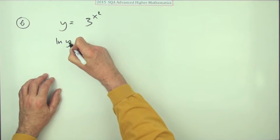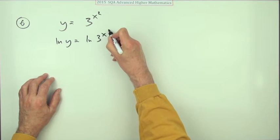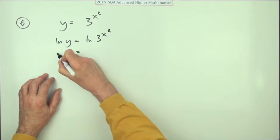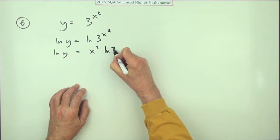So ln y equals ln of 3 to the power x squared. ln y will be, taking that power out, x squared times ln 3, which of course is just a constant. That'd be one mark.